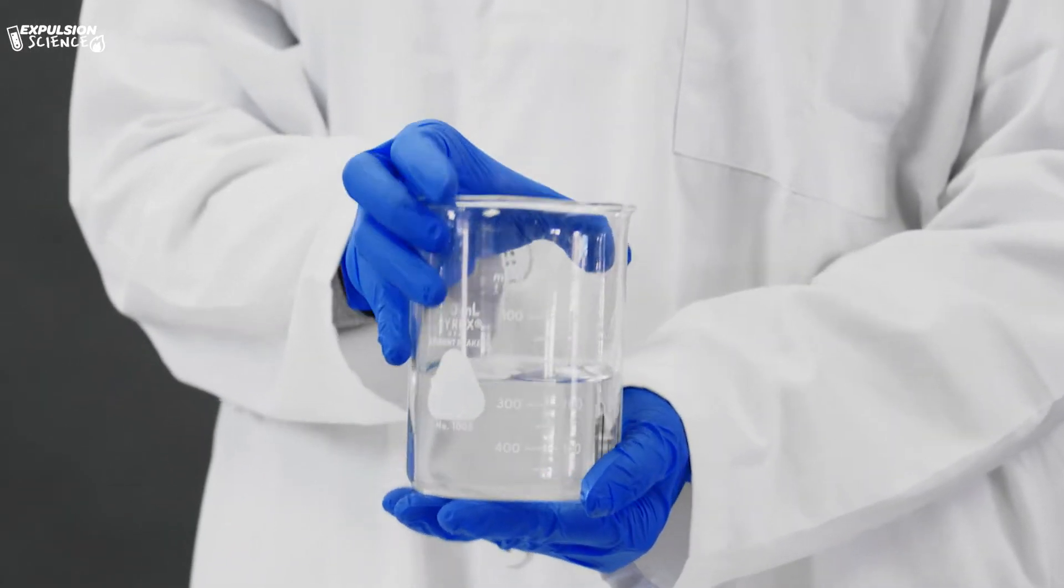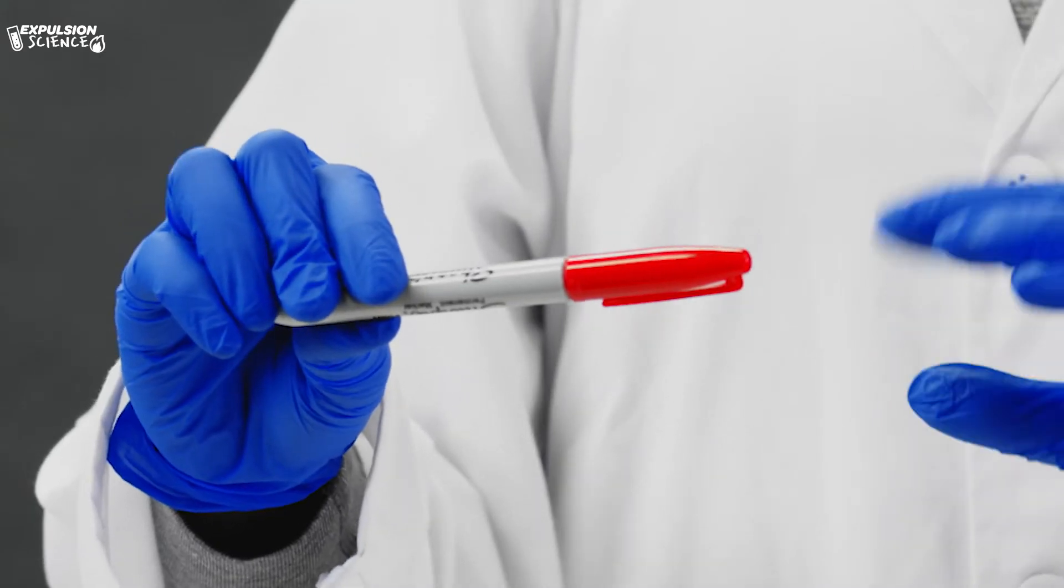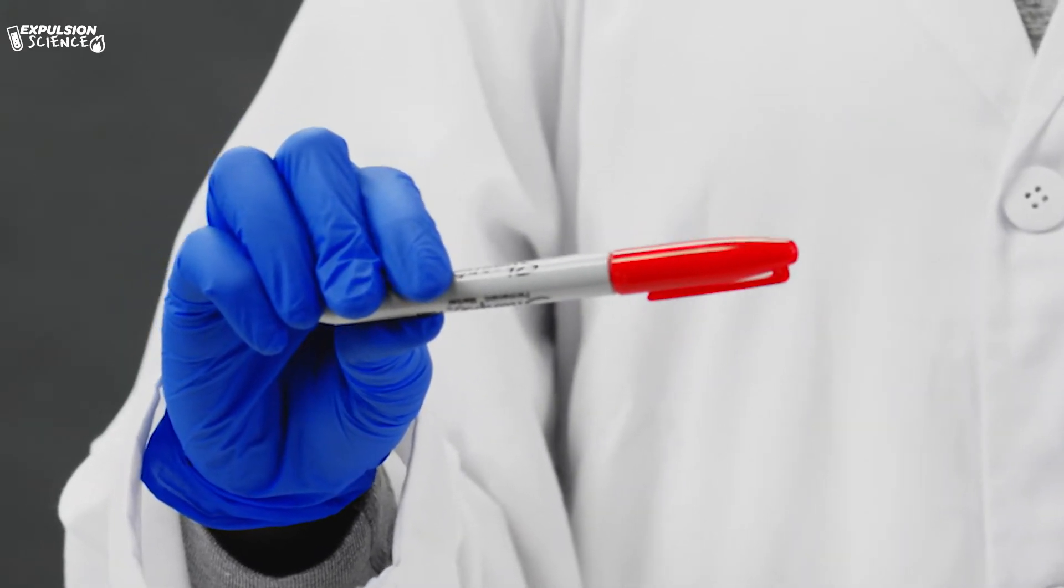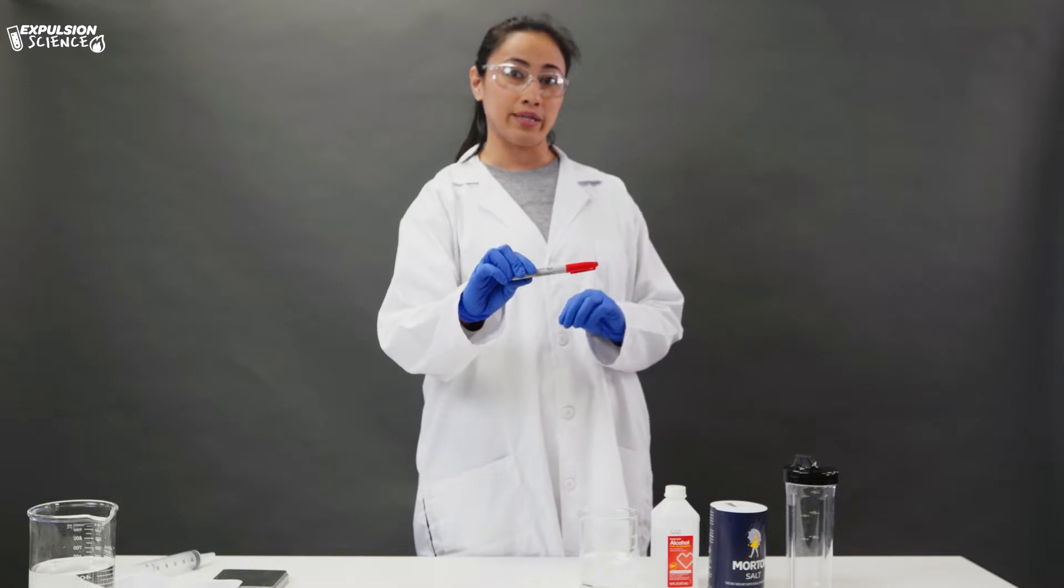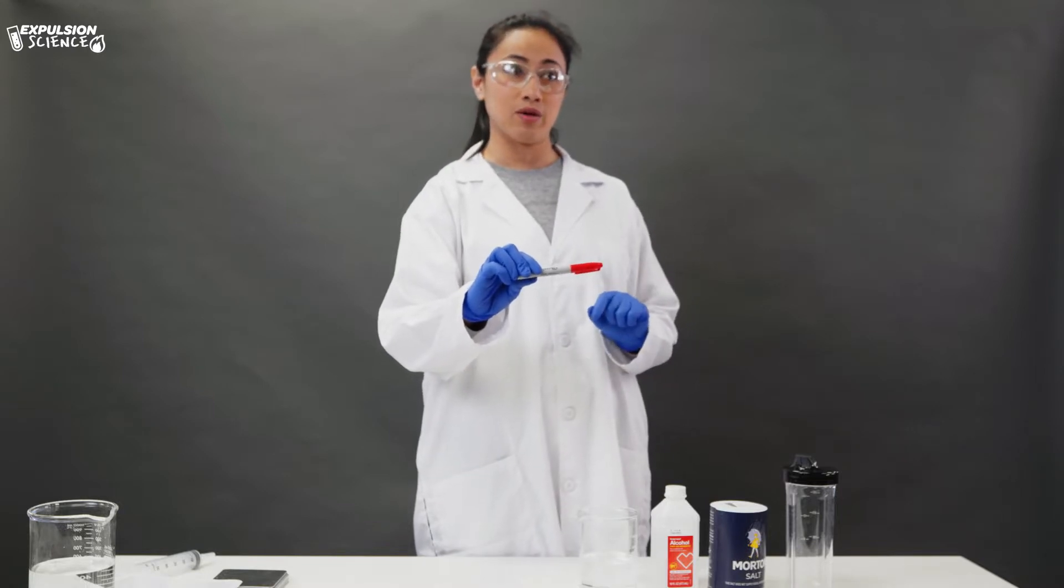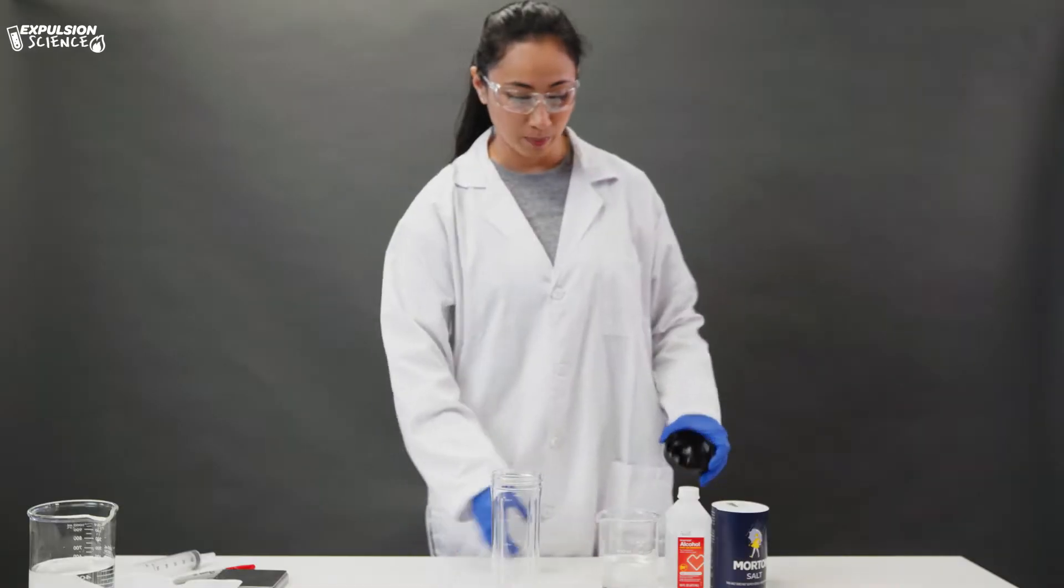The water has already been measured to about 250 milliliters. And then we are going to use a Sharpie that will allow us to visualize where the alcohol is and where the water is going to be in our mixture. So let's get started. We're going to pour the water.